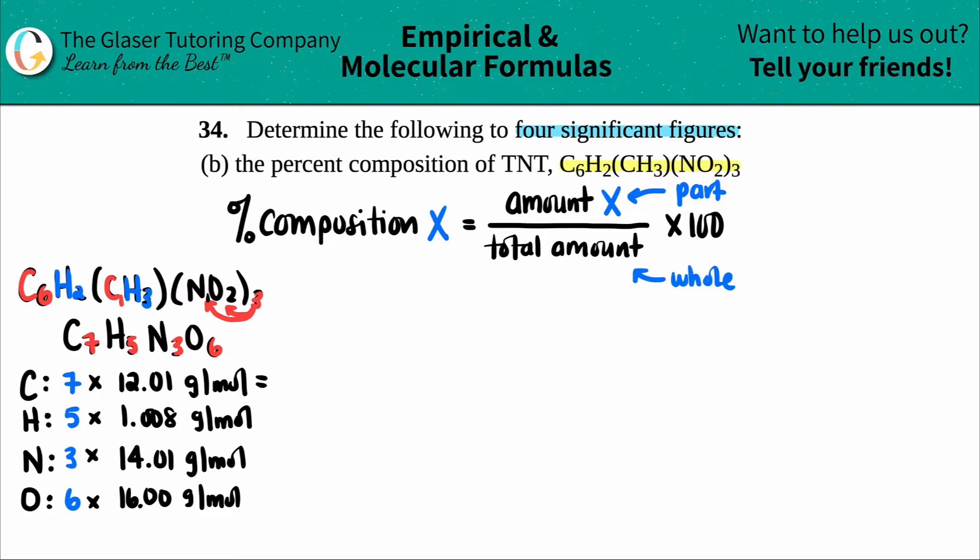So I just have to multiply each one. So I'll do seven times 12.01, five times this, three times that, and six times this. So let's see. Seven times 12.01, I get 84.07, and that's grams per mole of the carbon.